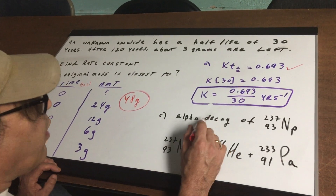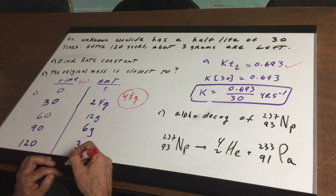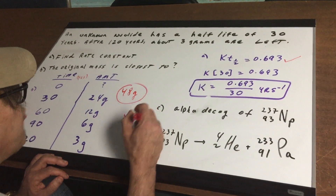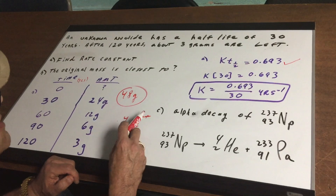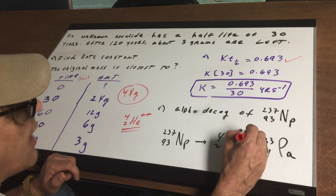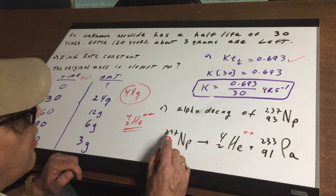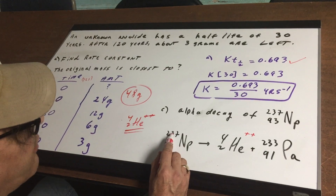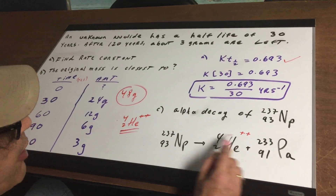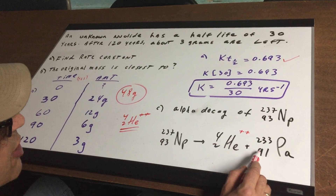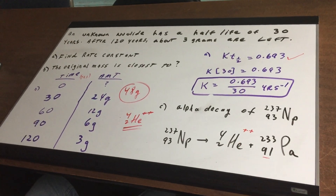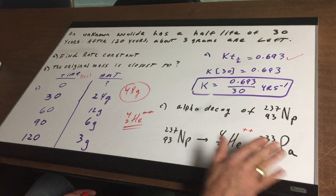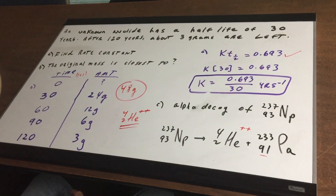For part C: what would be the alpha decay of neptunium-237 (atomic number 93)? In alpha decay, we lose an alpha particle, represented as 4-2-He (with two plus charges). When you lose an alpha particle, the mass goes down by 4 and the atomic number by 2. So 237 minus 4 gives 233, and 93 minus 2 gives 91. Looking up element 91, you find protactinium. So we form protactinium-233 from a single alpha decay of neptunium-237.